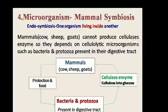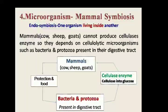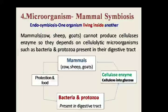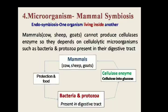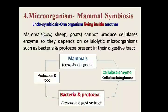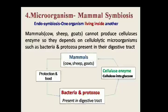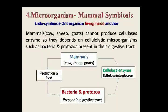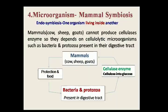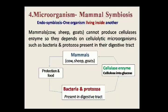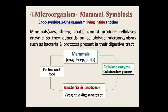The fourth type of microbial symbiosis is between microorganism and mammals — an example of endosymbiosis where one organism lives inside another. Mammals such as cows, sheep, and goats cannot produce cellulase enzyme, so they depend on cellulolytic microorganisms such as bacteria and protozoa present in their digestive tract. The bacteria and protozoa produce cellulase enzyme which converts cellulose into glucose, and in return the mammals give protection to the bacteria.